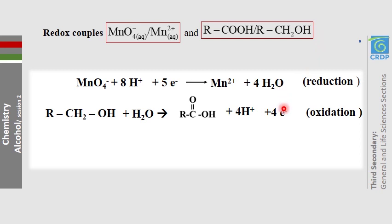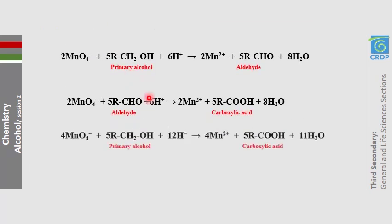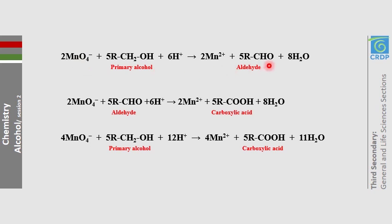To get the overall equation, multiply the reduction half-reaction by 4 and the oxidation half-reaction by 5, so that the number of electrons gained equals the number lost (20 each). Cancel the electrons to get the overall equation: primary alcohols with enough MnO₄⁻ give carboxylic acid. As overall, primary alcohols with limited MnO₄⁻ give aldehyde; with excess MnO₄⁻ they give carboxylic acid.